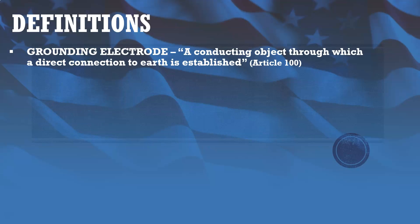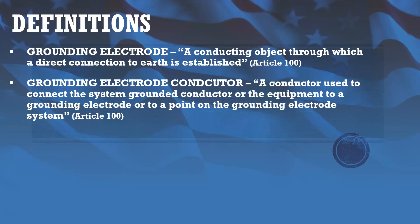Definitions. A grounding electrode is a conducting object through which a direct connection to Earth is established. Our definition of Earth is just the Earth — dirt. So essentially, a grounding electrode is some object we use to connect to the Earth with. A grounding electrode conductor is a conductor used to connect the system grounded conductor or the equipment to a grounding electrode or to a point on the grounding electrode system. In other words, it's a conductor that we use to connect something to a grounding electrode with.